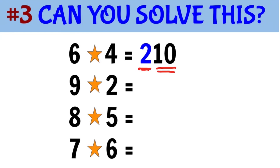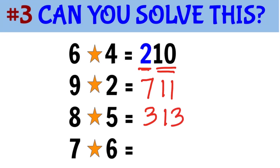So if you have 9 star 2, the difference is 7, and when you add them it's 11, so 9 star 2 is 711. Doing the same thing for 8 star 5, the difference is 3 and the sum is 13, so 8 star 5 is 313.